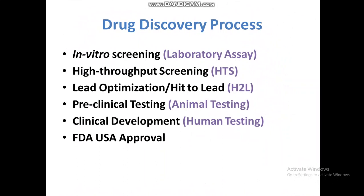During the drug discovery process, after obtaining our compounds, we perform in vitro screening, also known as laboratory screening or laboratory assay, to analyze these compounds for activity against a selected target. High throughput screening is when we use robots to analyze hundreds or thousands of compounds at a time using robotics — it is also performed in the laboratory.